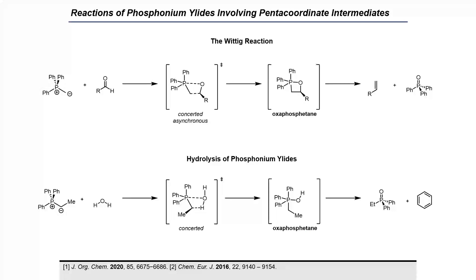In addition to stepwise associative nucleophilic substitution mechanisms, reactions of phosphonium ylids also involve the formation of pentacoordinate phosphorus intermediates. The Wittig reaction between a phosphonium ylid and a carbonyl involves the concerted asynchronous formation of an oxyphosphetane intermediate, which then undergoes cycloreversion to afford an alkene and phosphine oxide product. Similarly, hydrolysis of phosphonium ylids has also been proposed to proceed through a pentacoordinate intermediate, in which concerted C-H and P-O bond formation results in an oxyphosphetane intermediate, which then undergoes elimination of benzene to form the phosphine oxide product.